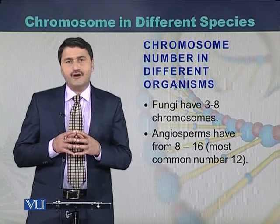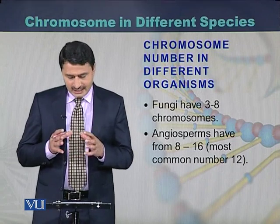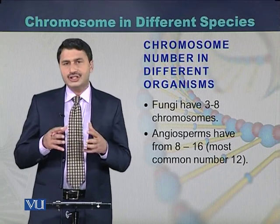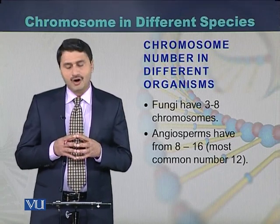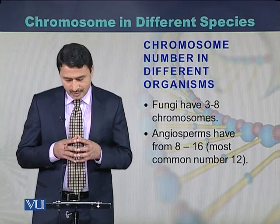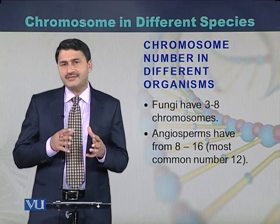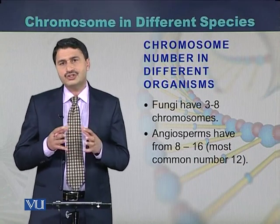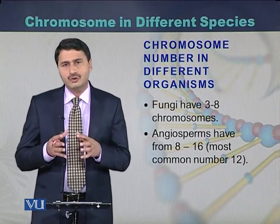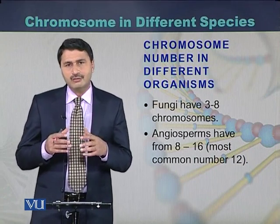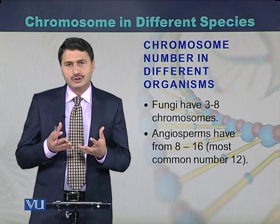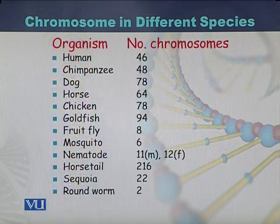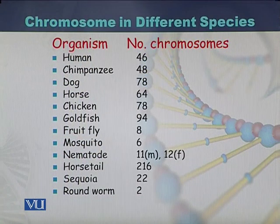In the case of fungi, they have 3 to 8 chromosomes, while in the case of angiosperms they have 8 to 16 chromosomes, but in most angiosperms the chromosome number is around 12.